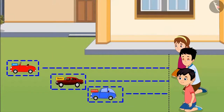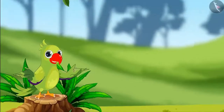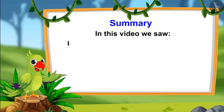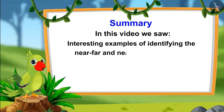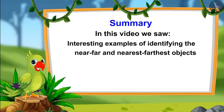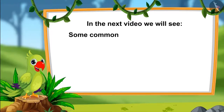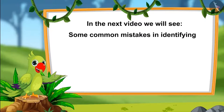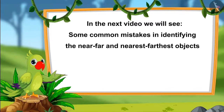So children, did you see? Aarti's car went the farthest and Chotu's car the nearest. In this video we saw interesting examples of identifying near, far, nearest, and farthest objects. In the next video we will see some common mistakes in identifying near, far, nearest, and farthest objects. Till then, bye friends!